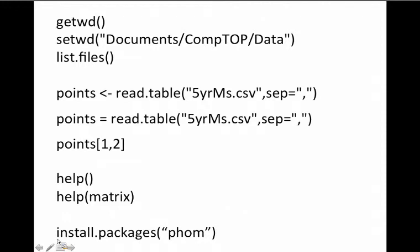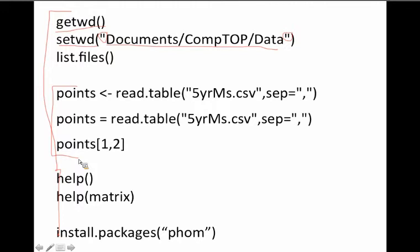Some useful R commands: R doesn't use Linux commands — it has its own. Instead of 'pwd' for print working directory, it's 'getwd' for get working directory. To change your working directory, use 'setwd' with quotes around the path. You can list files in the directory as well. You can read a CSV file to create a matrix of points, and the indexing starts at 1, not 0. Note that this matrix way of reading in is not compatible with FOM — it will crash it. I have not yet found the compatible version and will let you know when I do.